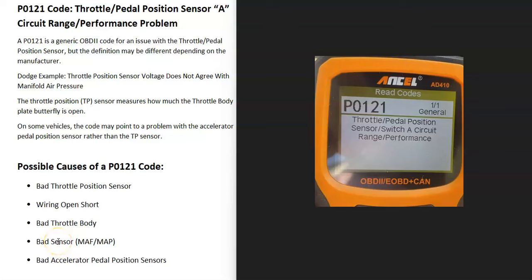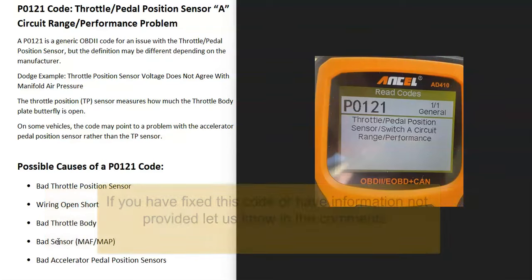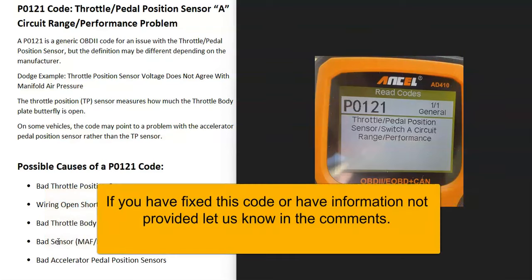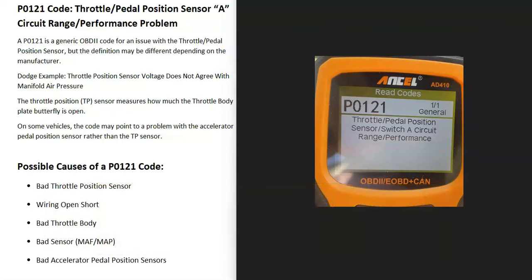Today I'm talking about a P0-121 code — what it is and how you go about fixing it. A P0-121 code is a throttle pedal position sensor circuit range performance problem. One thing to note is that the P0-121 code is just a generic code for the throttle pedal position sensor, and the exact definition may be different depending on the vehicle, the manufacturer, and things like this.